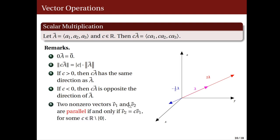Two non-zero vectors v1 and v2 are said to be parallel if and only if one is a scalar multiple of the other. That is, v2 can be written as a scalar c times the vector v1 for some non-zero scalar c.